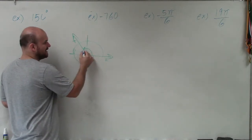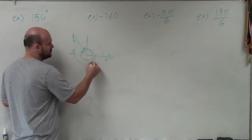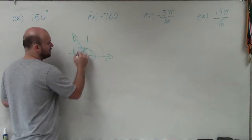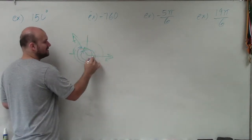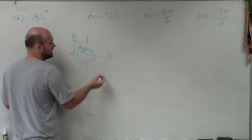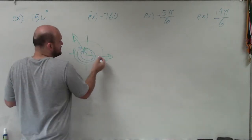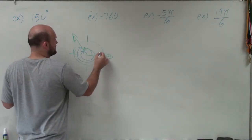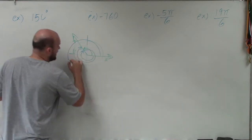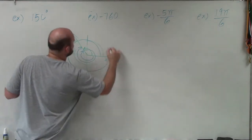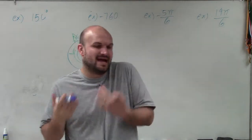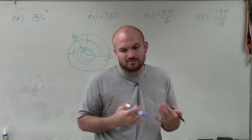I could also go in the negative direction and then just do an extra loop — go around once — and I'm still starting at the initial side and ending at the same terminal side. I could also do this in the positive direction: instead of ending at our initial angle, I can go around one more time. The basic understanding of coterminal angles is that they have the same initial and terminal side.